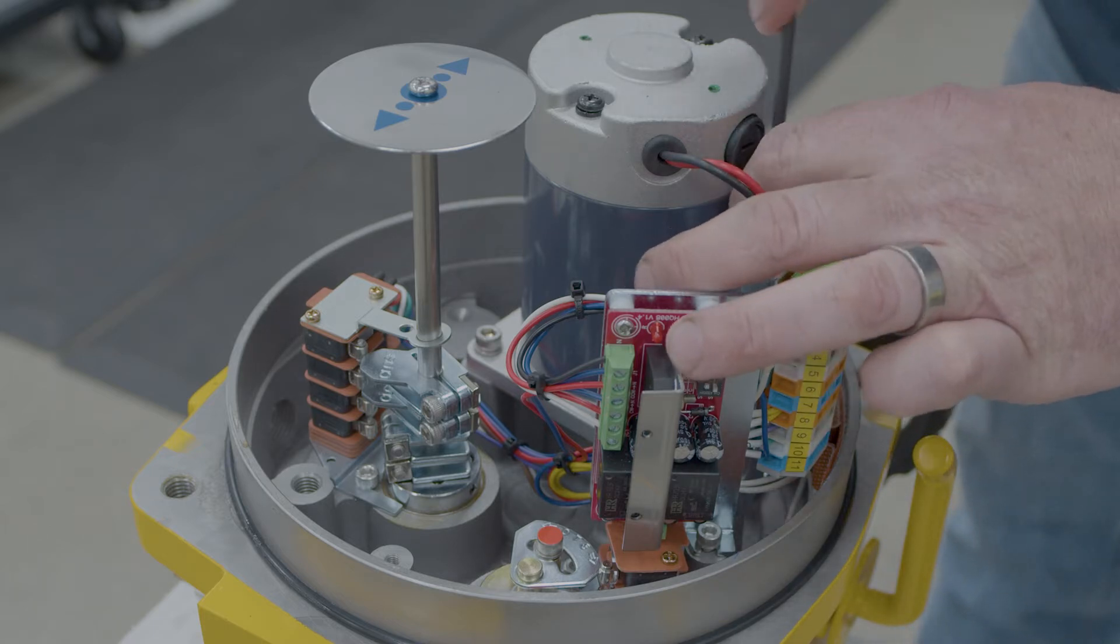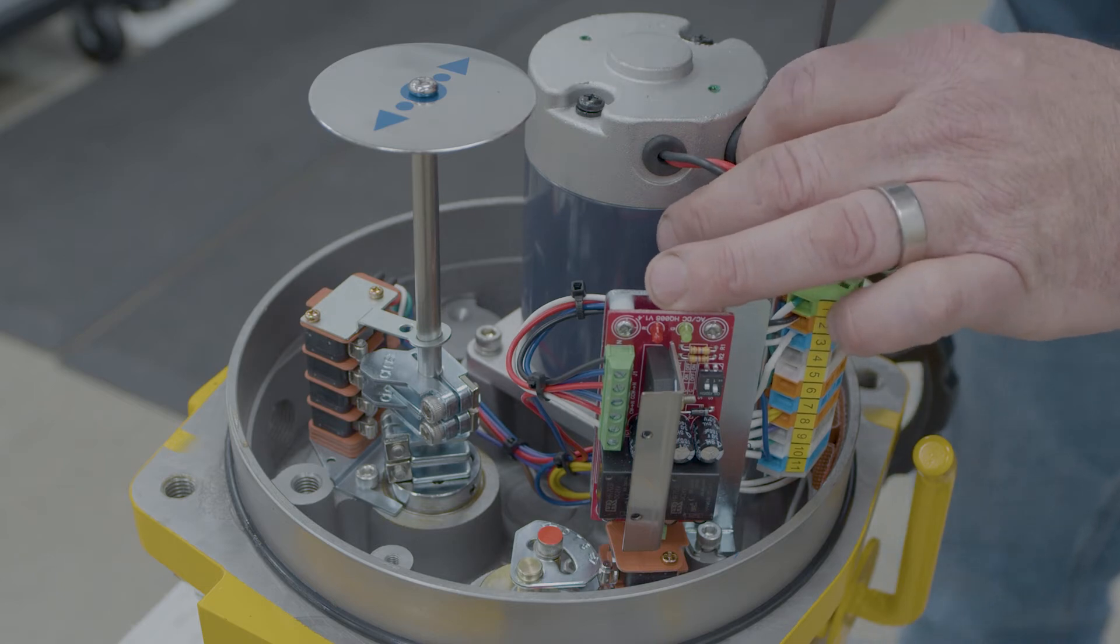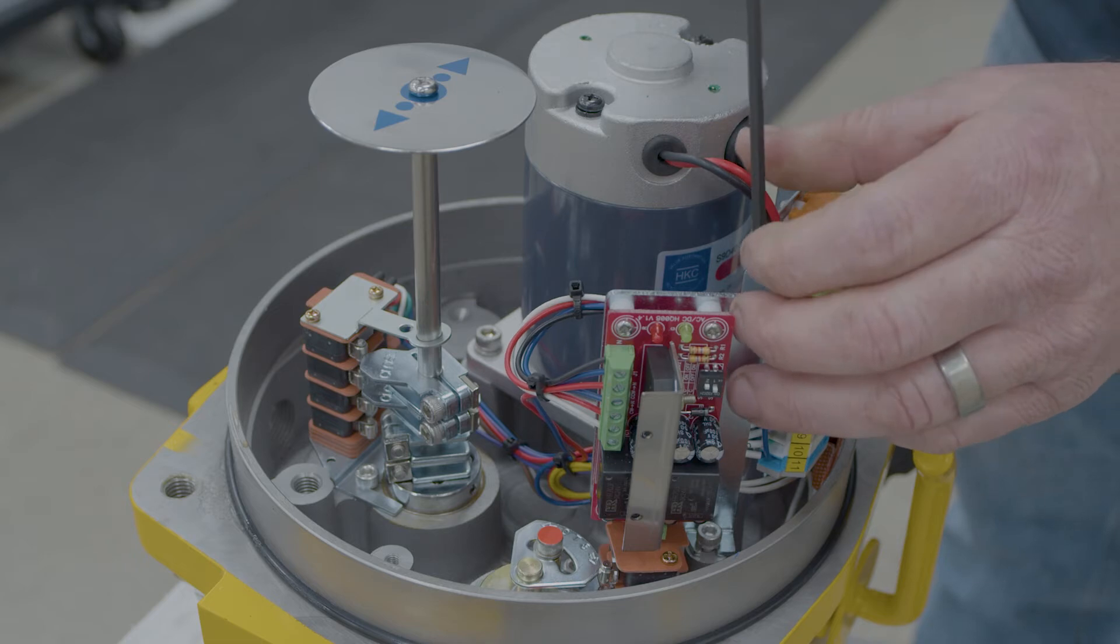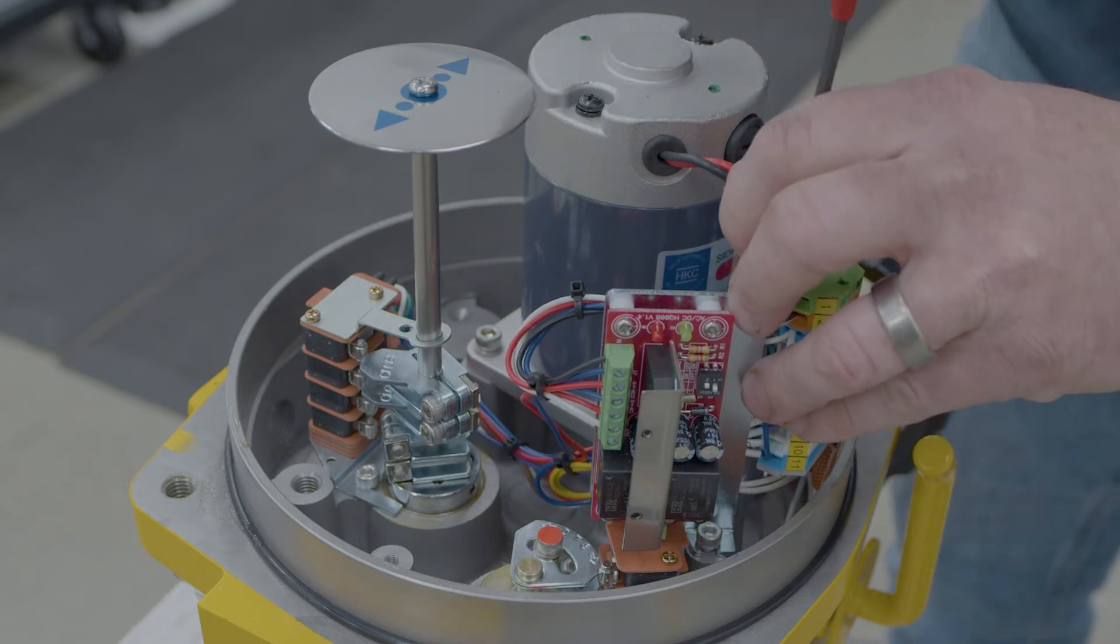Then we'll remove the two allen head screws at the bottom. Now you can either take them all the way out or just loosen them and then wiggle the bracket out, whichever is easiest for you.